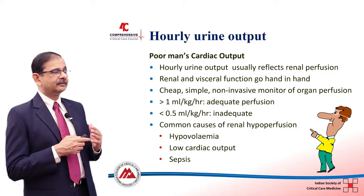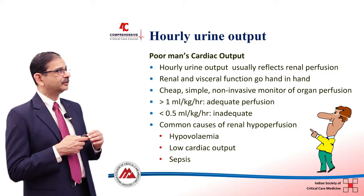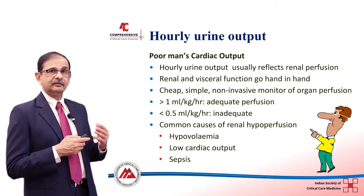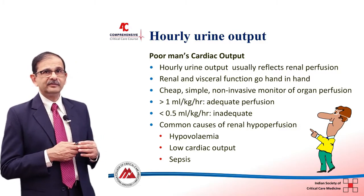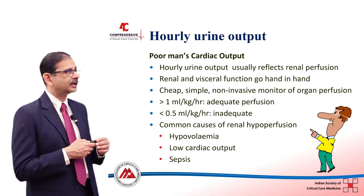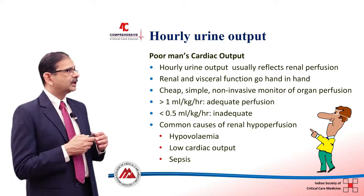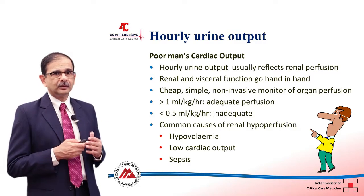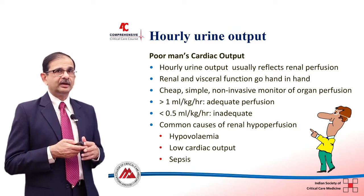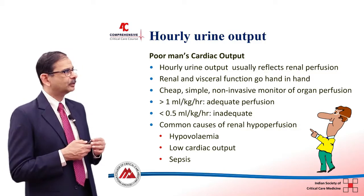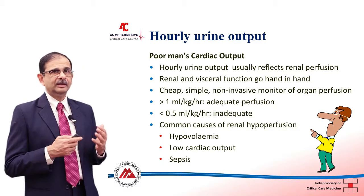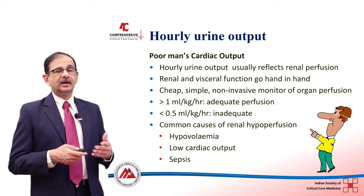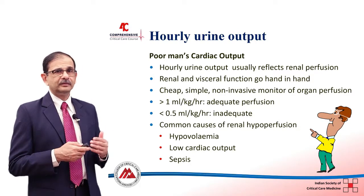The hourly urine output reflects renal perfusion and goes hand in hand with visceral organ function. It is therefore a very cheap, simple, and non-invasive method of assessing tissue and organ perfusion. We generally say that if the urine output is more than 1 ml per kg per hour, cardiac output and tissue perfusion are adequate. If it is less than 0.5 ml per kg per hour for a couple of hours, perfusion is considered inadequate.